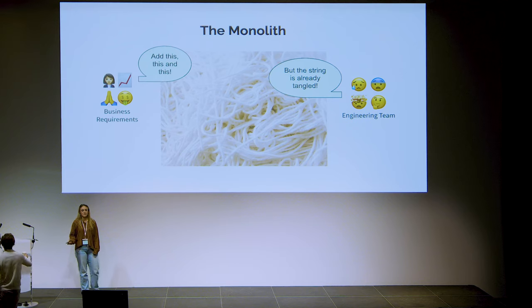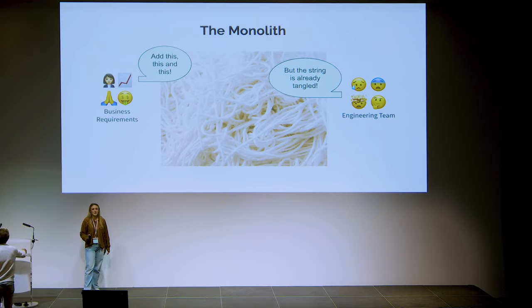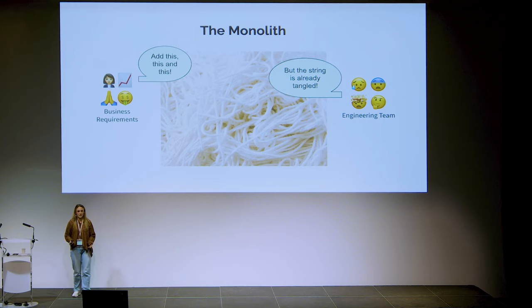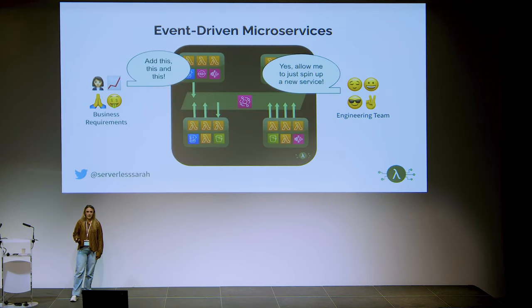The problem starts with the famous monolith. Traditional architectures might begin with a beautiful codebase, but then the business throws extra requirements at us and the engineering team gets stressed — if we add one thing it might bring something else down, or a new developer adds a feature without realizing there's a dependency on it elsewhere, and we end up with bugs, tech debt, and everyone becomes very stressed.